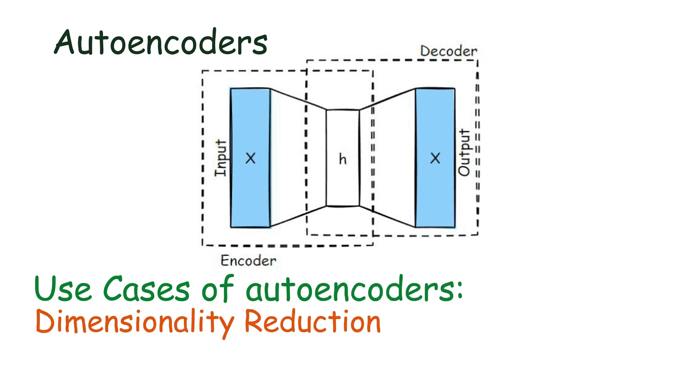Let us talk about the use cases of autoencoders. Dimensionality reduction: Autoencoders can reduce the dimensionality of data, making it easier to visualize or process. Anomaly detection: By learning to reconstruct normal data, autoencoders can identify anomalies by their reconstruction errors. Data denoising: They can remove noise from data such as images or signals.